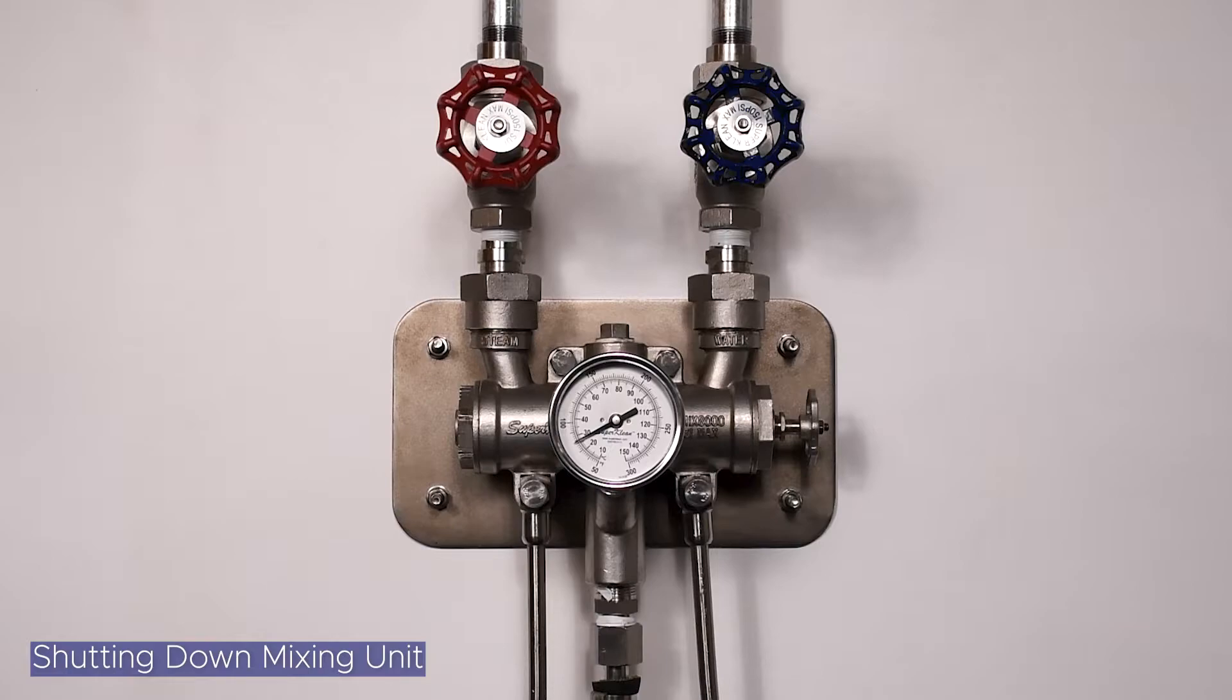After both globe valves are fully closed, spray the nozzle to release excess water. When all water flow has stopped, your hose and nozzle can be stored until your next washdown cycle.